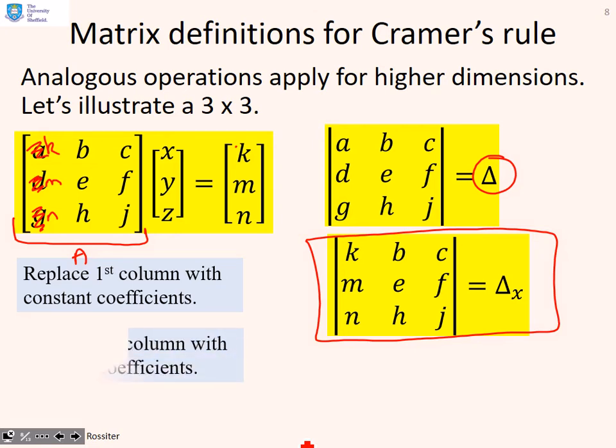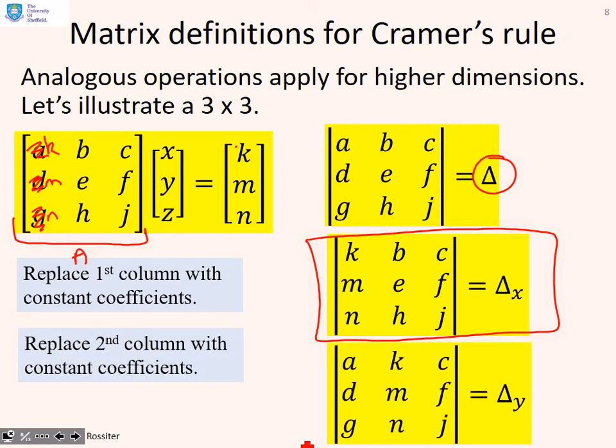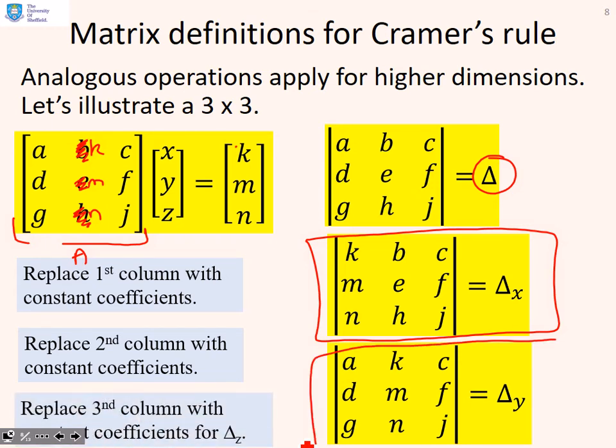If I want the coefficients linked to y, I use exactly the same technique. I replace the coefficients linked to y with the constant coefficients. The key word is replace all the time, and now we get delta_y. Similarly, if we wanted delta_z, we'd replace the third column with the coefficients.